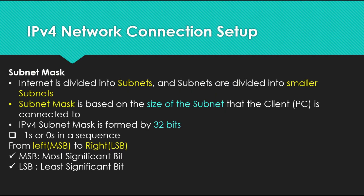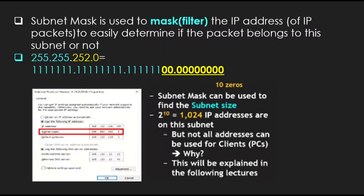The internet is divided into subnets — these are subdivisions of the overall internet, grouped so that networks are managed together, which helps routing be much more efficient and scalable. Some subnets are divided into smaller subnets within. A subnet mask is based on the size of the subnet that the client PC is connected to. An IPv4 subnet mask is formed by 32 bits, the same length as its IP address, with ones or zeros in a sequence from left to right — from the MSB (most significant bit) to the LSB (least significant bit). The subnet mask is used to filter the IP address so you can easily determine if a packet belongs to this subnet or not.